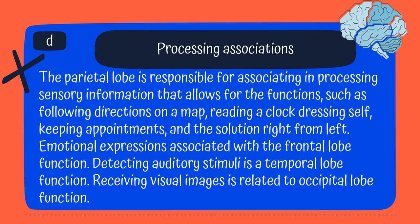The answer is D: processing associations. You have to know the parts of the brain. The parietal lobe is responsible for associating and processing sensory information, allowing functions such as following directions on a map, reading a clock, dressing oneself, keeping appointments, and distinguishing right from left. Emotional expression is associated with the frontal lobe, detecting auditory stimuli is the temporal lobe, and visual images relate to the occipital lobe.